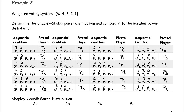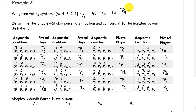Once you have all of those correct, the next thing we need to do is determine how many times each player was pivotal. Player 1 was pivotal 10 times. Player 2 was pivotal 6 times. Player 3 was pivotal 6 times. And lastly, player 4 was pivotal 2 times.